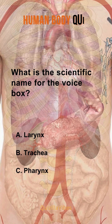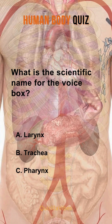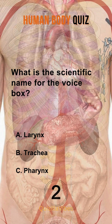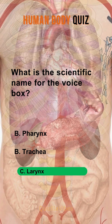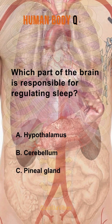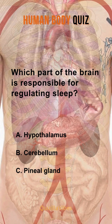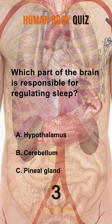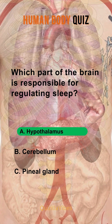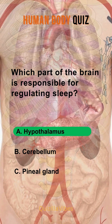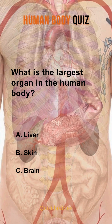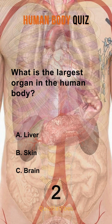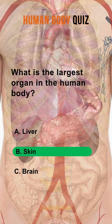What is the scientific name for the voice box? Larynx. Which part of the brain is responsible for regulating sleep? Hypothalamus. What is the largest organ in the human body? Skin.